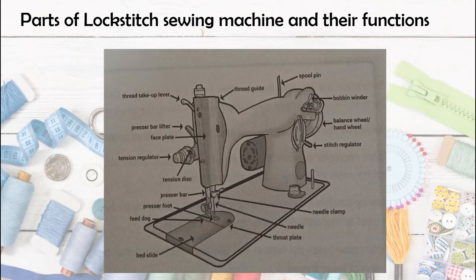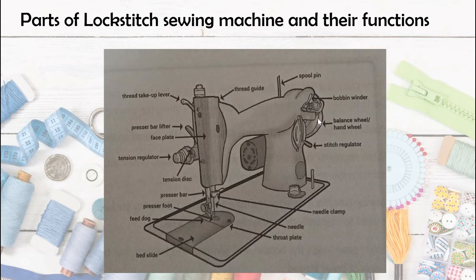The balance wheel is located at the right of the head, driven by the belt. It can be used to manually move the needle up and down. For example, when you finish sewing and the needle is in the down position, you cannot simply pull the fabric — you might break the needle or tear the fabric. So we use the balance wheel: turn it forward to raise the needle, and then you can pull the fabric away.